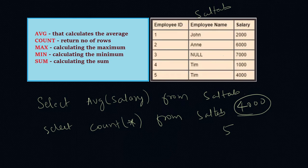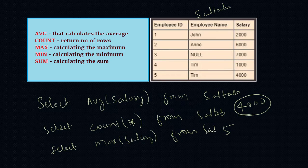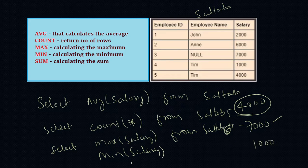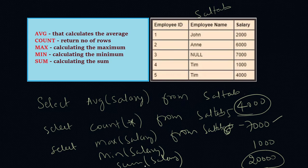Then Max — to find who is getting the maximum salary. You write SELECT MAX(salary) FROM salary_table. The maximum salary is 7000. Same way, minimum salary — you get 1000 as the minimum. And for sum of salary, the total sum is 20000. That's how we can use these functions to calculate.